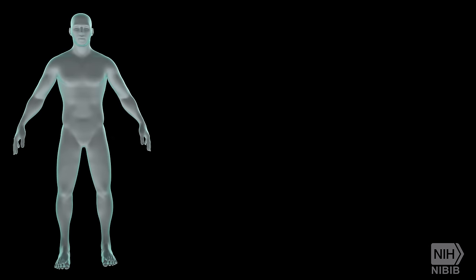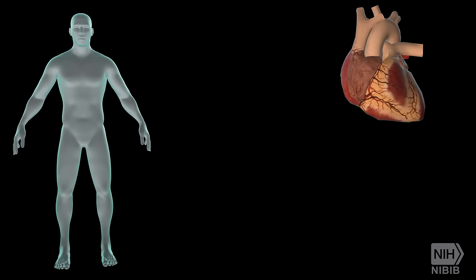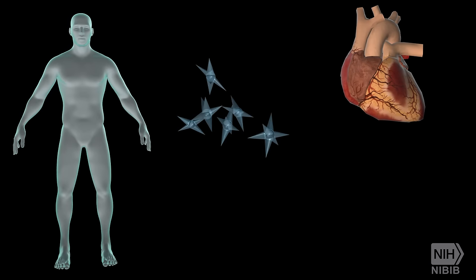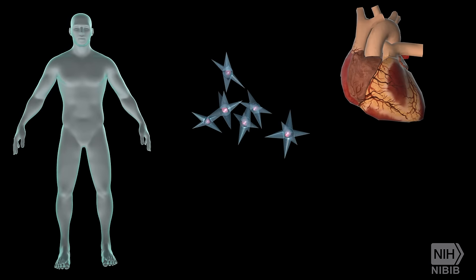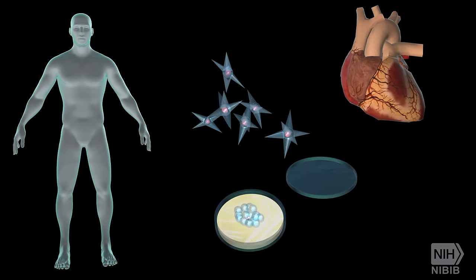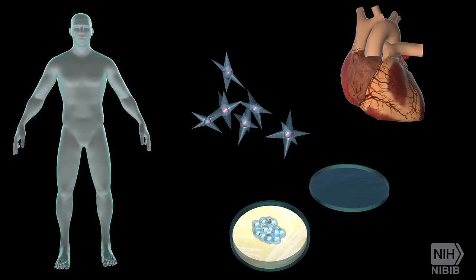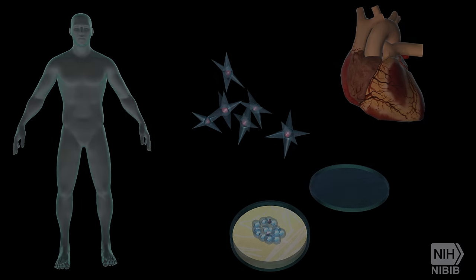The cells can be directly harvested from the target organ, developed from precursor or stem cells, or taken from lines grown in the lab — all ideally from the patient, as that limits problems with rejection.